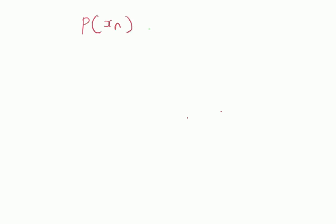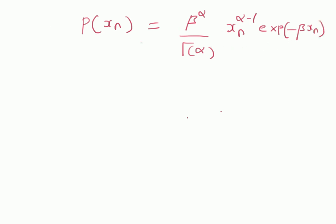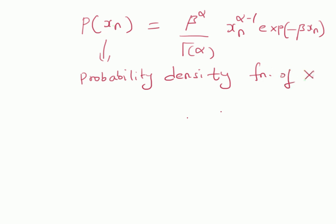Given the probability density function of a gamma random variable, it is: probability of x_n given by (beta^alpha / Gamma(alpha)) * x_n^(alpha minus 1) * exponential of minus beta * x_n. That is the probability density function of the random variable x_n.